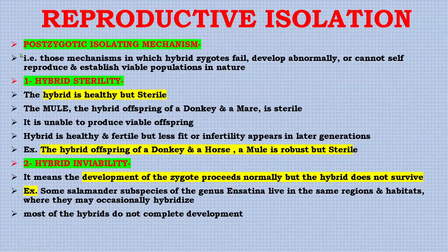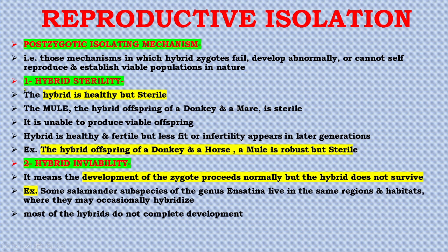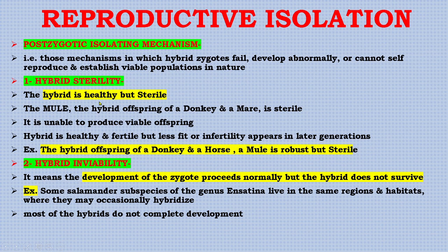Post-zygotic isolating mechanisms are those in which a hybrid zygote fails to develop normally or cannot self-reproduce and establish viable populations in nature. One example is hybrid sterility, where the hybrid is healthy but sterile. The mule — the hybrid offspring of a donkey and a mare — is sterile and unable to produce viable offspring.